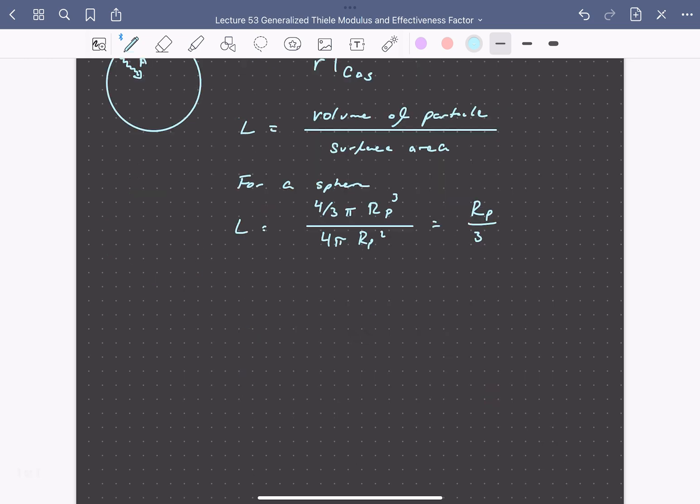So in this case, we can define a generalized Thiele modulus for an nth order reaction in A. So the generalized Thiele modulus we can write as L, our characteristic length scale, times n plus 1, the order of reaction, divided by 2, times the reaction rate constant K, times the concentration of A at the surface, raised to the power of n minus 1, divided by the effective diffusivity of A. And this is all raised to the power of 1 half. So here our Thiele modulus just depends on the length scale for diffusion and our respective rate and diffusion constants. We'll note that this expression gets somewhat more complicated if we consider reversible reactions as well.